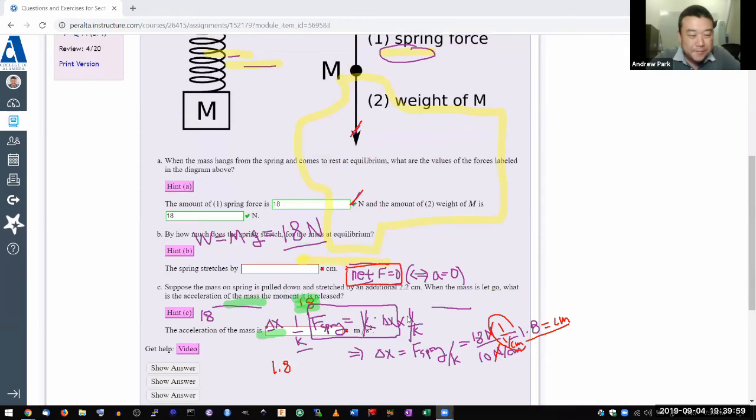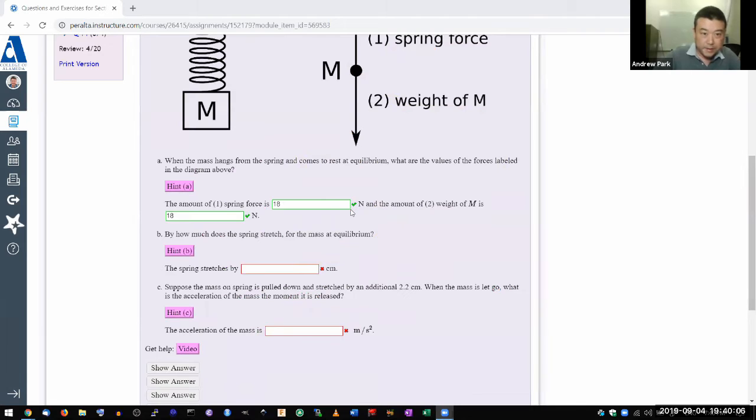It says suppose the mass and spring is pulled down and stretched by, and this is the word I want to pay attention to, by an additional 2.2 centimeters. I'll try to illustrate this with a force diagram. We have this object with two forces acting on it at equilibrium.